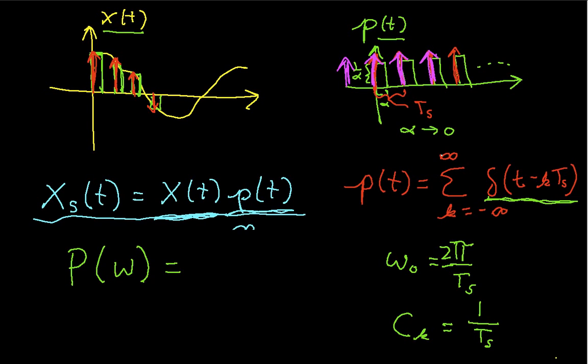So, the 1 over t sub s is the 1 over the period that's in front of the integral, and the 1 up here is just the area of the delta function. If you have questions about why that should work, you might look at the Fourier series video and see if that makes sense.